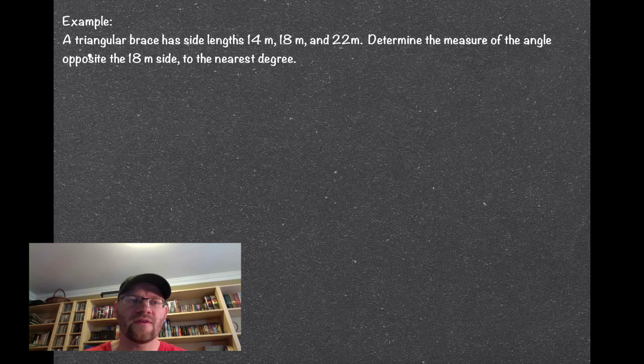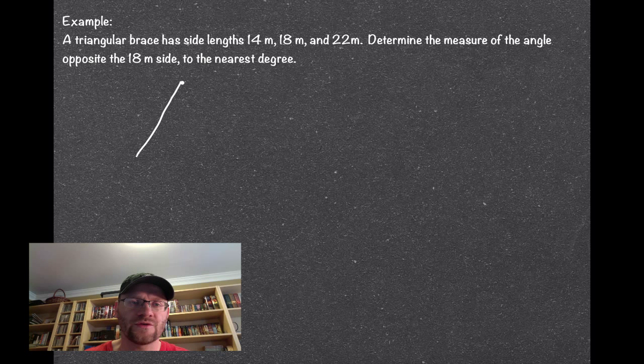And here's our last example. It says, a triangular brace has side lengths 14 meters, 18 meters, and 22 meters. Determine the measure of the angle opposite the 18 meter side to the nearest degree. So if I just draw a triangle, I've got a 14 meter, an 18 meter, and a 22 meter, and I'm looking for this side right here, or this angle right here, I'll call it X.